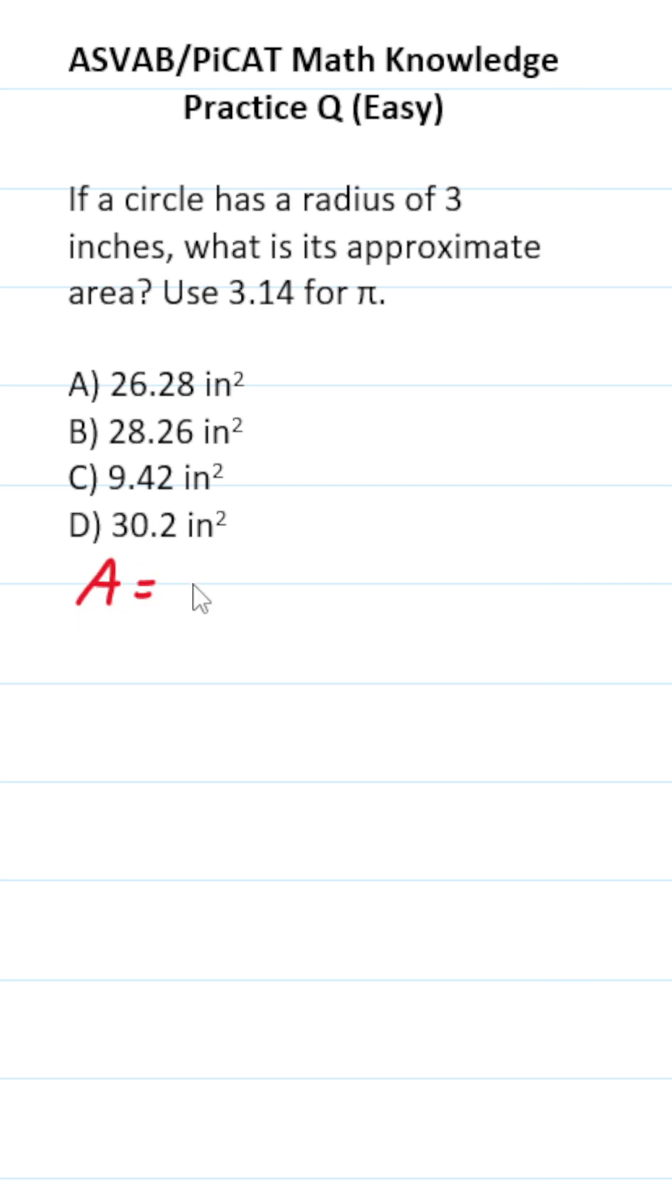To find the area of a circle, we use the formula pi r squared, where r is the radius. So this becomes pi. We're told the radius of our circle is 3, 3 squared. 3 squared is 9, so this is 9 pi.